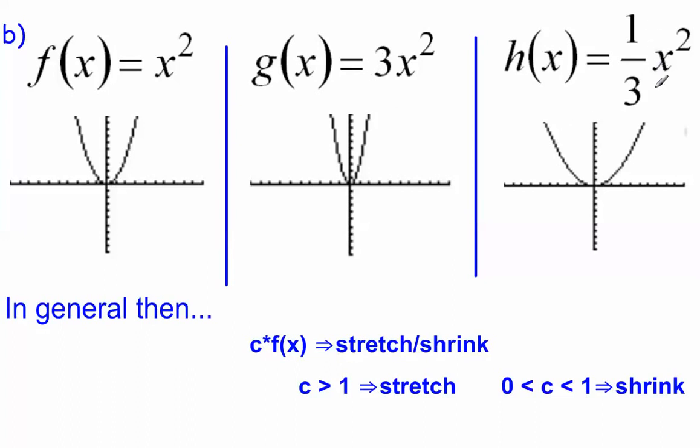If I multiply it by 1/3, it takes all my original y values and multiplies them by 1/3, which shortens or flattens it out, shrinks it down. So the rule is: if I have a multiplier c*f(x) where c > 1, it stretches and makes it skinnier. If 0 < c < 1, it flattens it out, makes it fatter. We call that a shrink.